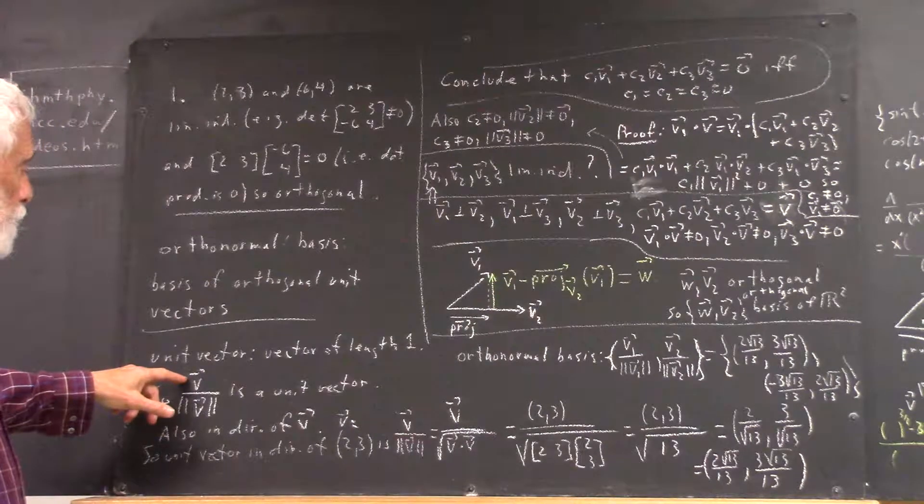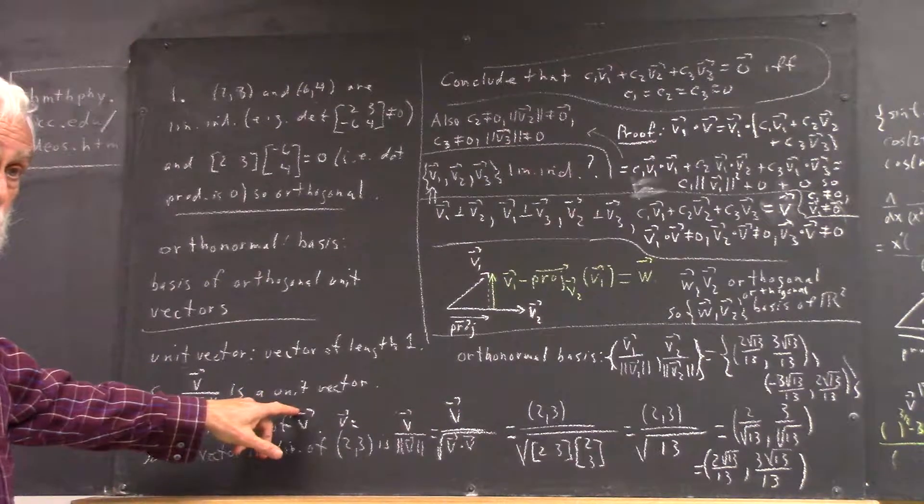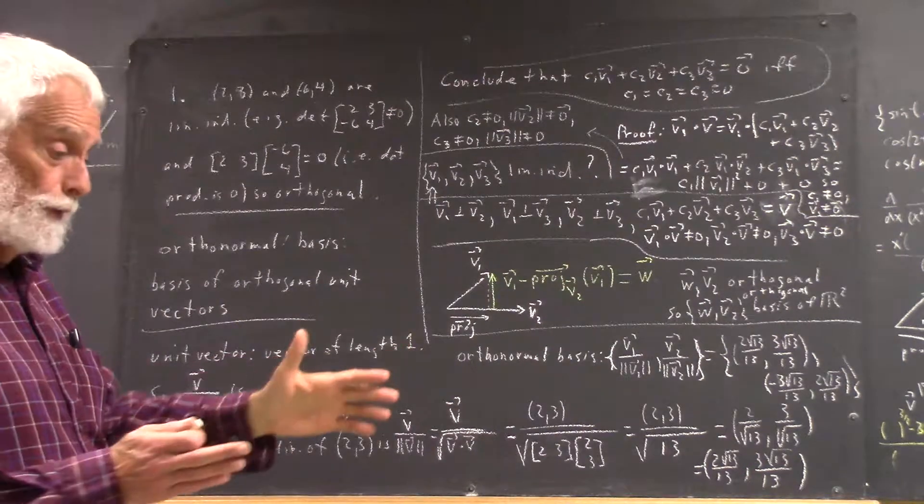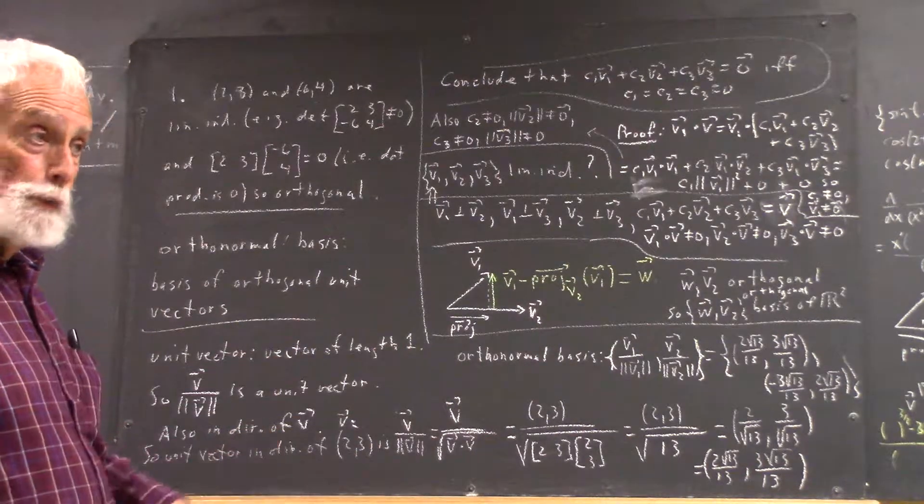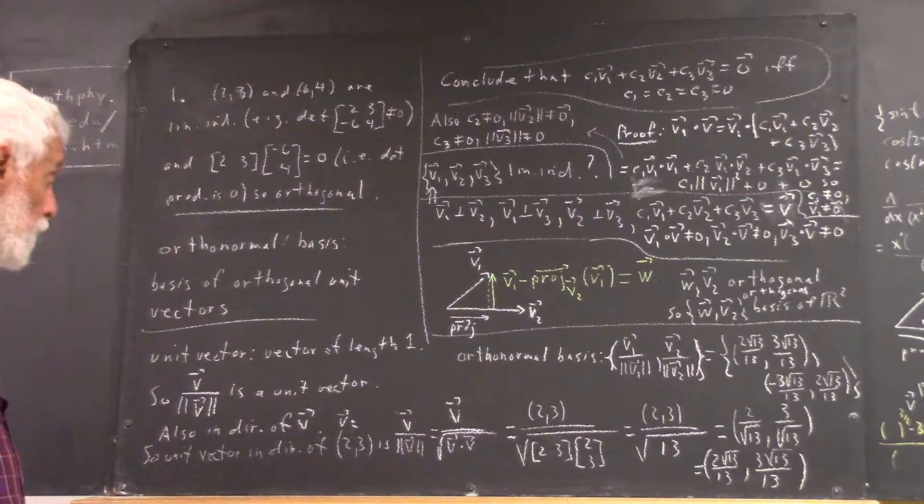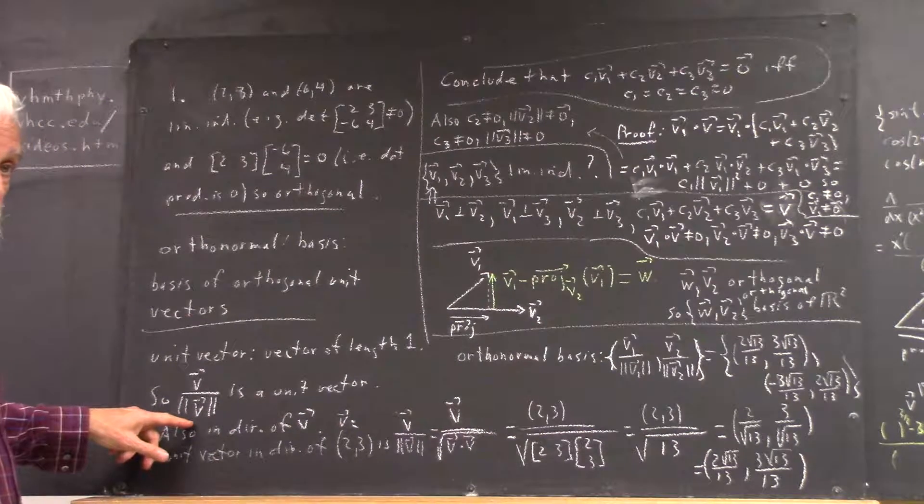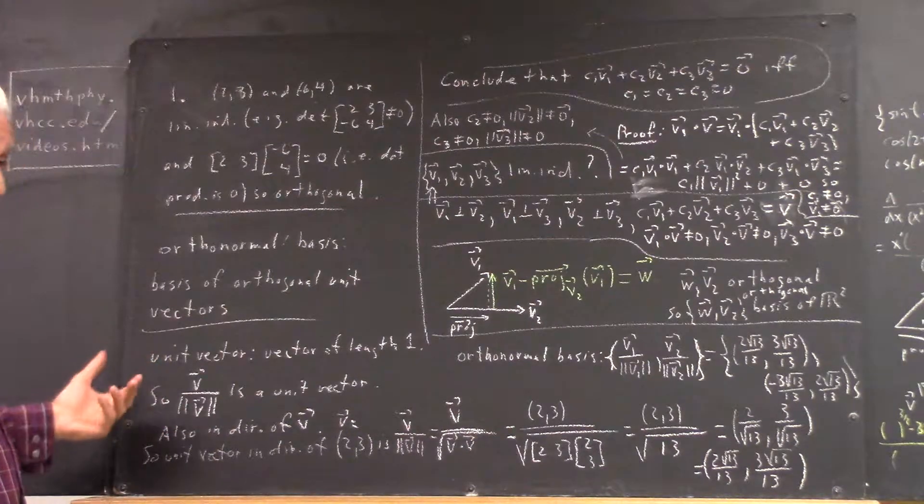Anyhow, for any non-zero vector, V over its magnitude is a unit vector. Because if you divide a vector by its length, you get a vector of length 1. It also has a direction of the V vector, because this is nothing but a multiple of V by a positive number.